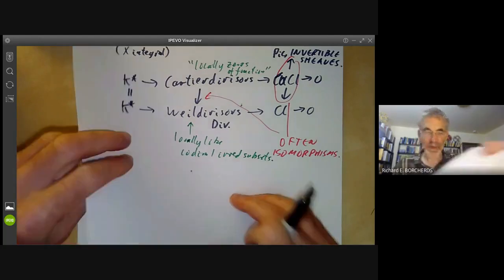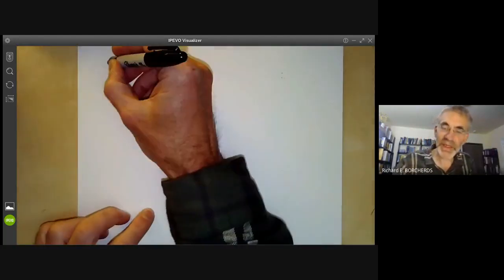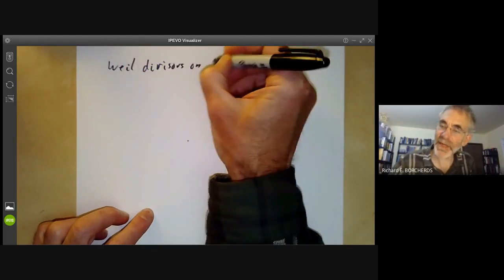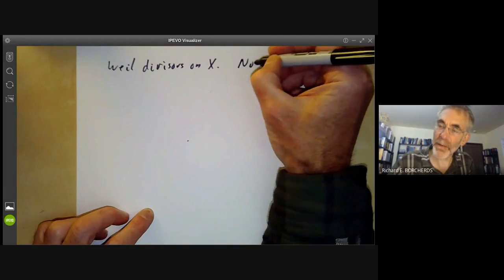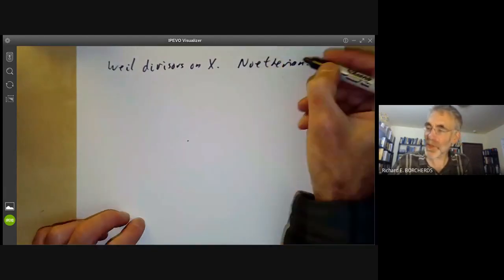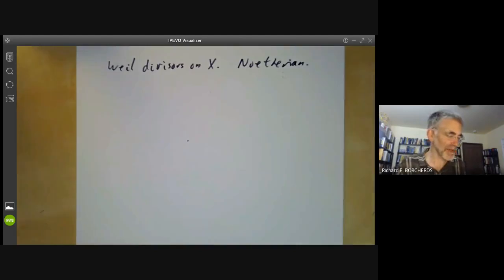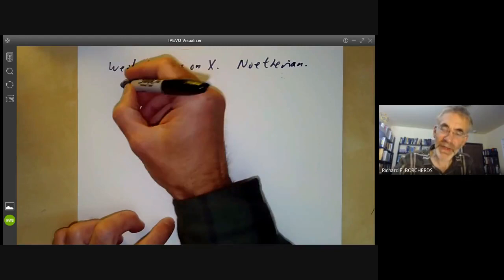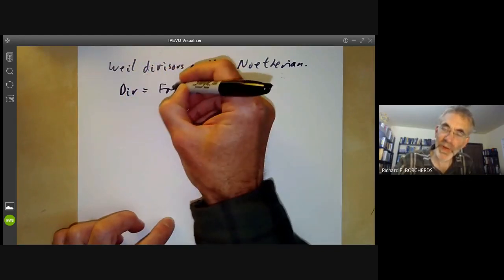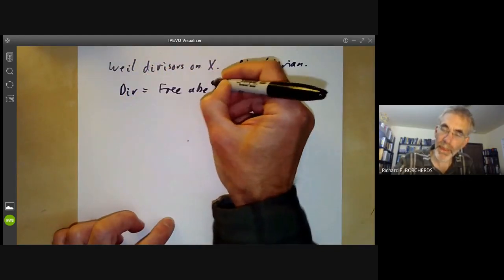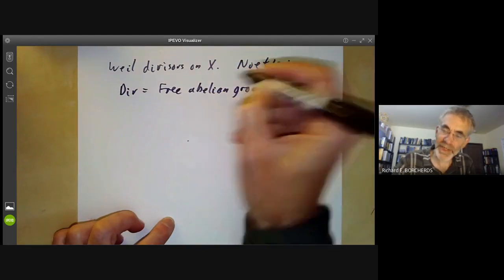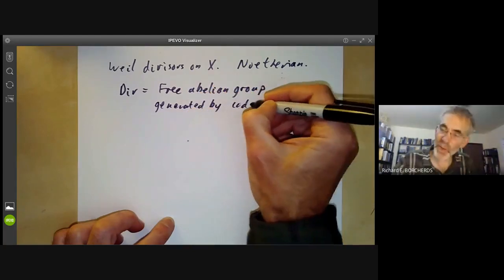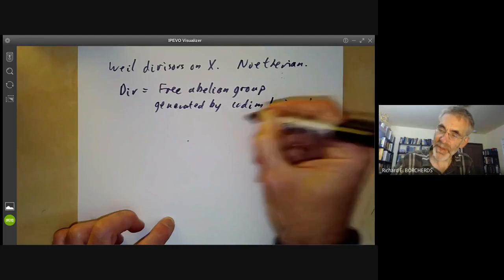So let's first define Weil divisors on scheme X. Let's assume X is Noetherian, which covers almost all cases. The Weil divisor is just the free abelian group generated by codimension one irreducible subsets of the underlying topological space of X.